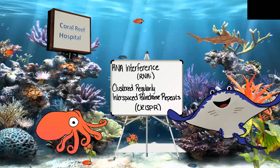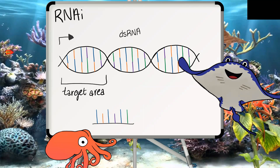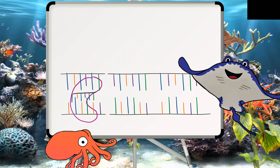Bixby wants to understand the process of both procedures before making his final decision, so Dr. Ray goes into more depth. First, he explains RNAi. He says: first we find the double-stranded RNA that we want to target. Then we take short RNA, such as siRNA or miRNA, and create complementary strands to the target sequence. The complementary strand is put into an RNA-induced silencing complex, or RISC, which guides it to the target RNA and is cleaved by the enzyme dicer.